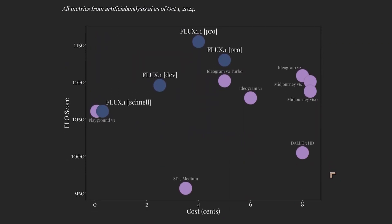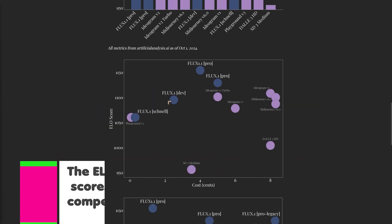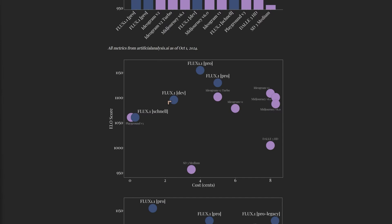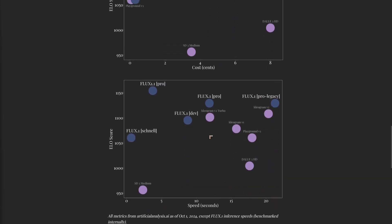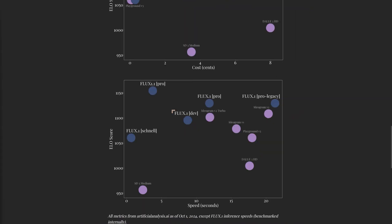Looking at costs, Flux 1.1 does very well with a reasonable cost but very high output. The output score measures prompt adherence and aesthetic quality — how well it adheres to the prompt and how beautiful the image is. On inference speeds, Stable Diffusion 3 Medium is very fast, Schnell is even faster with better quality, and the Flux 1.1 Pro is really strong — faster than the Dev and the previous Pro model. The new Pro version is three times faster, which is pretty fascinating.